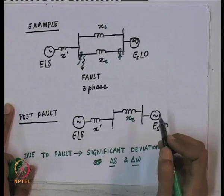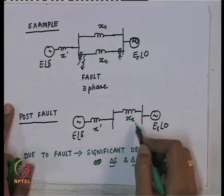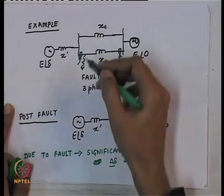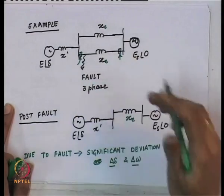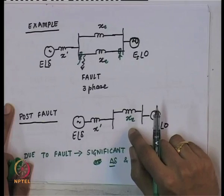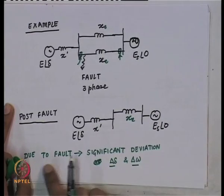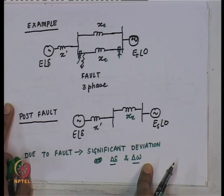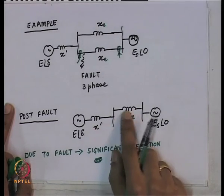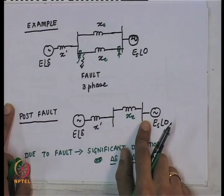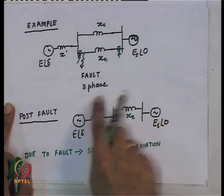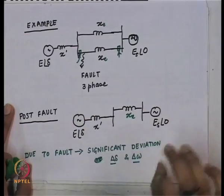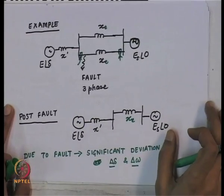This is a typical large-disturbance stability question: if there is a large disturbance like a fault, causing significant deviation in angles and speeds from equilibrium, are we going to come back to an acceptable equilibrium after the fault is cleared? Specifically, will we reach the post-fault equilibrium? That is the question we need to ask.